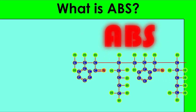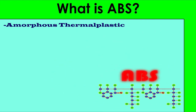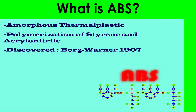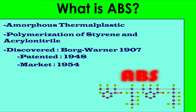So what is ABS? ABS is a thermoplastic, an amorphous polymer, and therefore has no true melting point. ABS is made by polymerizing styrene and acrylonitrile in the presence of polybutadiene. ABS was discovered in 1907 by the Borg-Warner Corporation and it was patented in 1948, hitting the commercial market in 1954.